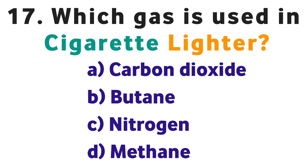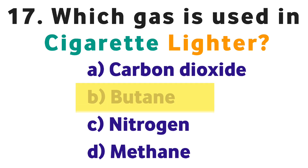Question number seventeen: Which gas is used in a cigarette lighter? Option A: Carbon dioxide, B: Butane, C: Nitrogen, D: Methane. Correct answer is B: Butane.